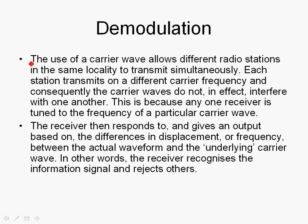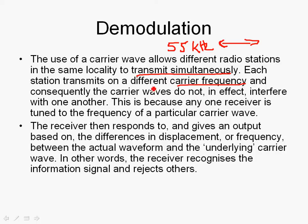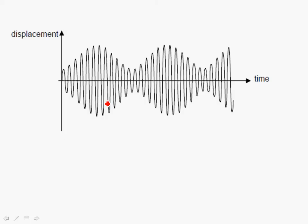The process of extracting the information is called demodulation. The use of carrier waves allows different radio stations in the same locality to transmit simultaneously — each station transmits at a different carrier frequency. For example, one station uses 55 kHz and another uses 60 kHz. Because the frequencies are different, interference is not significant and the carrier waves do not effectively interfere with each other, since any one receiver is tuned to only one particular carrier frequency and will not pick up the others.